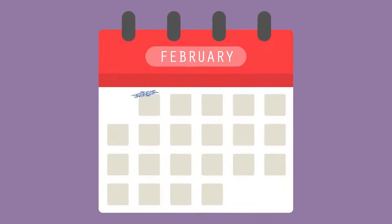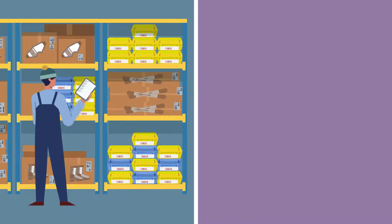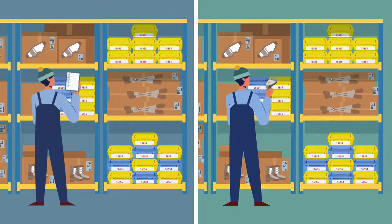Companies schedule a physical inventory count at the end of a reporting period – monthly, quarterly, or yearly. They can be conducted either manually, using pen and paper, or electronically, using a mobile scanning device.